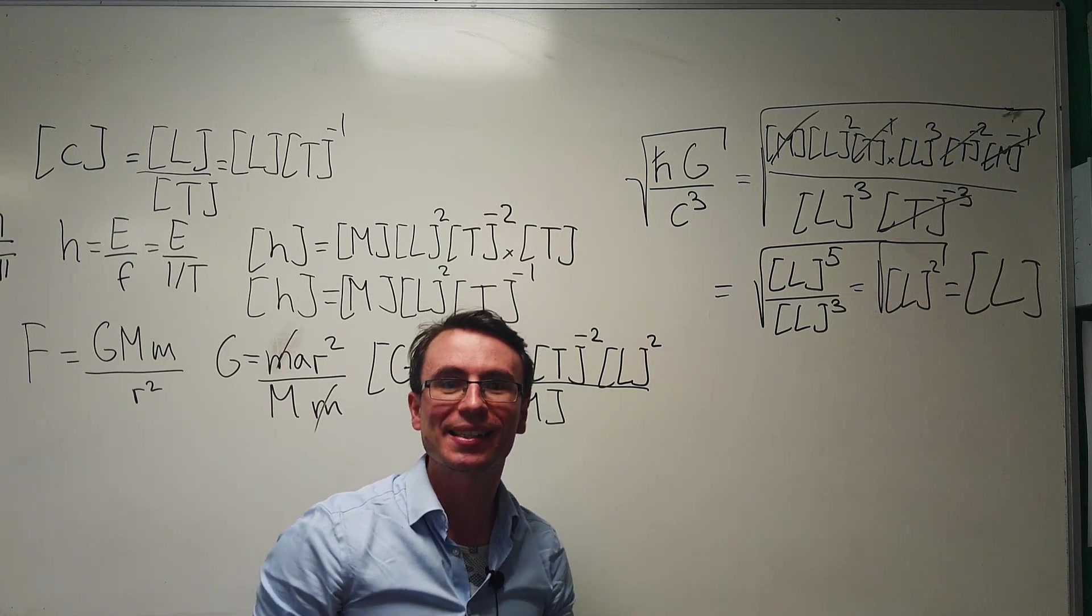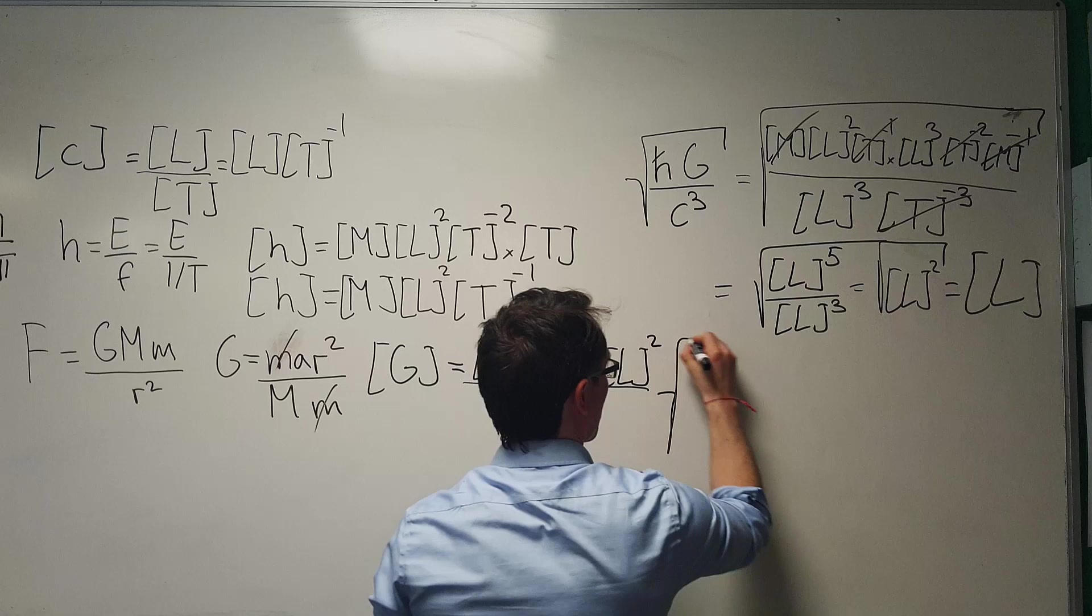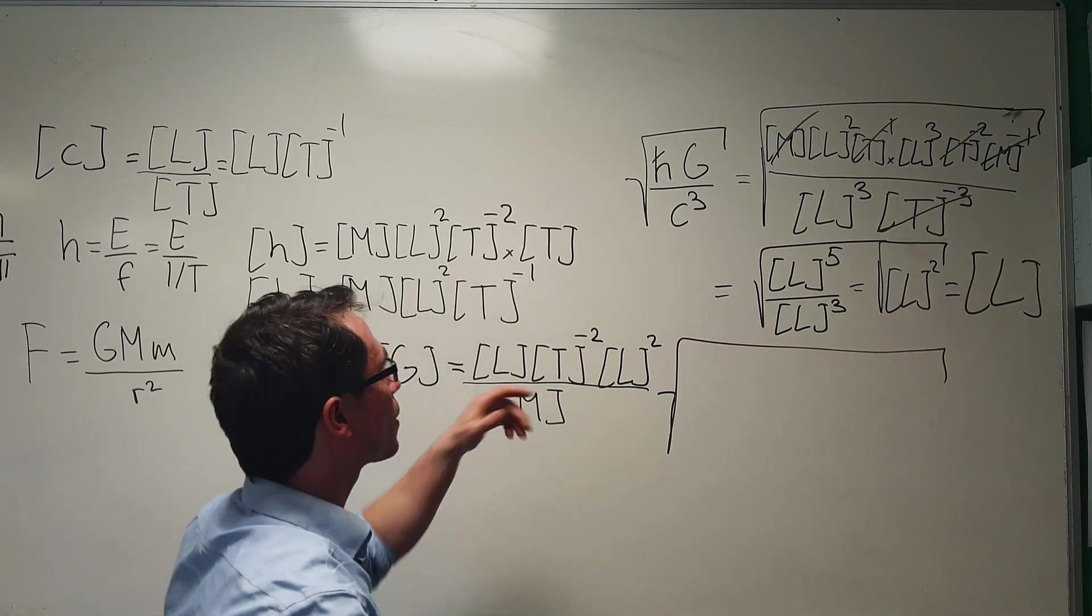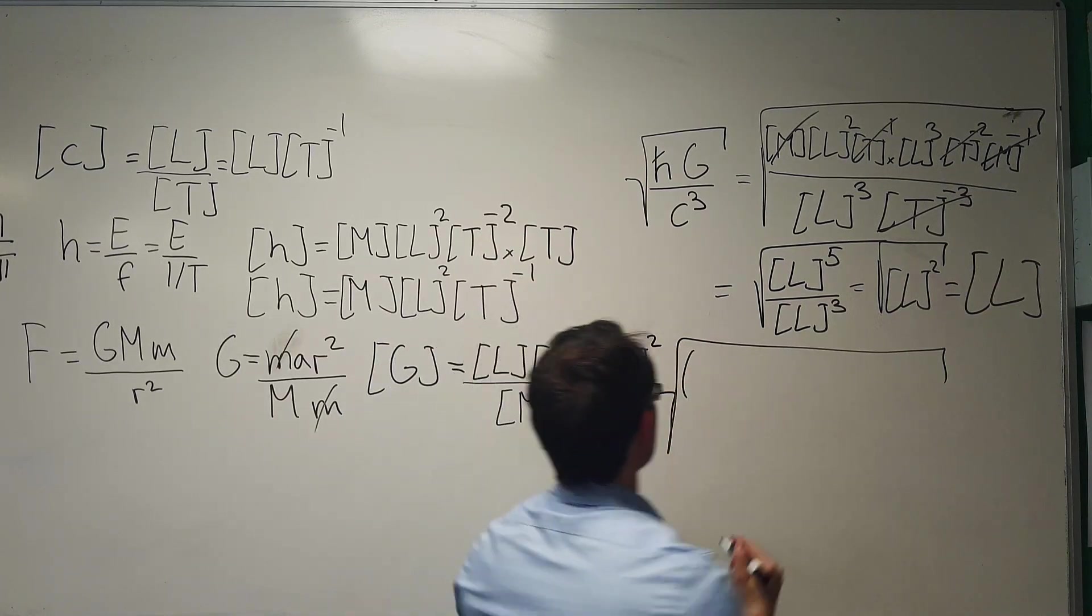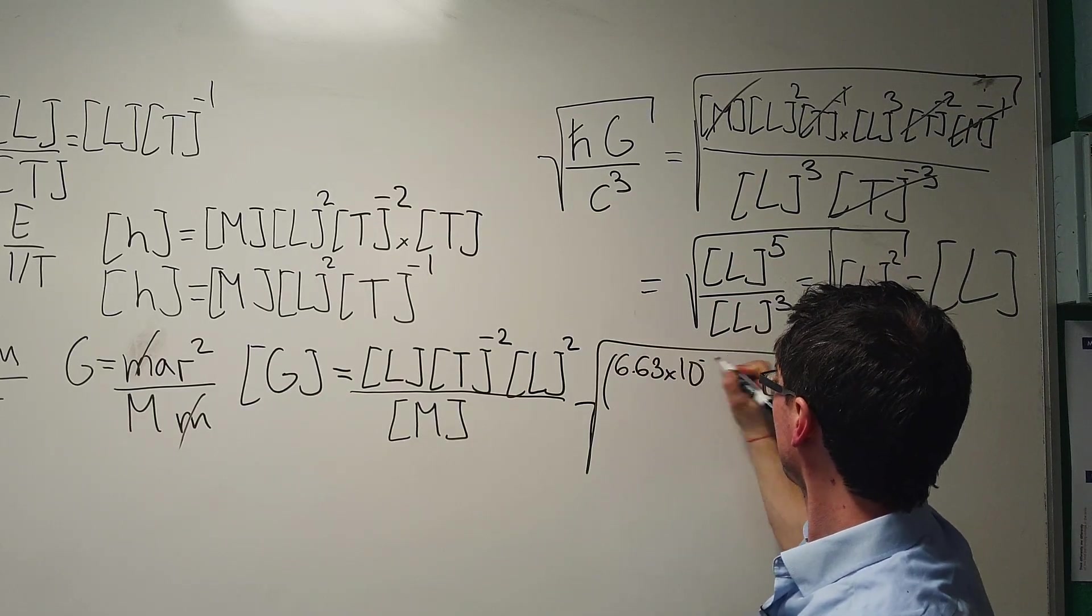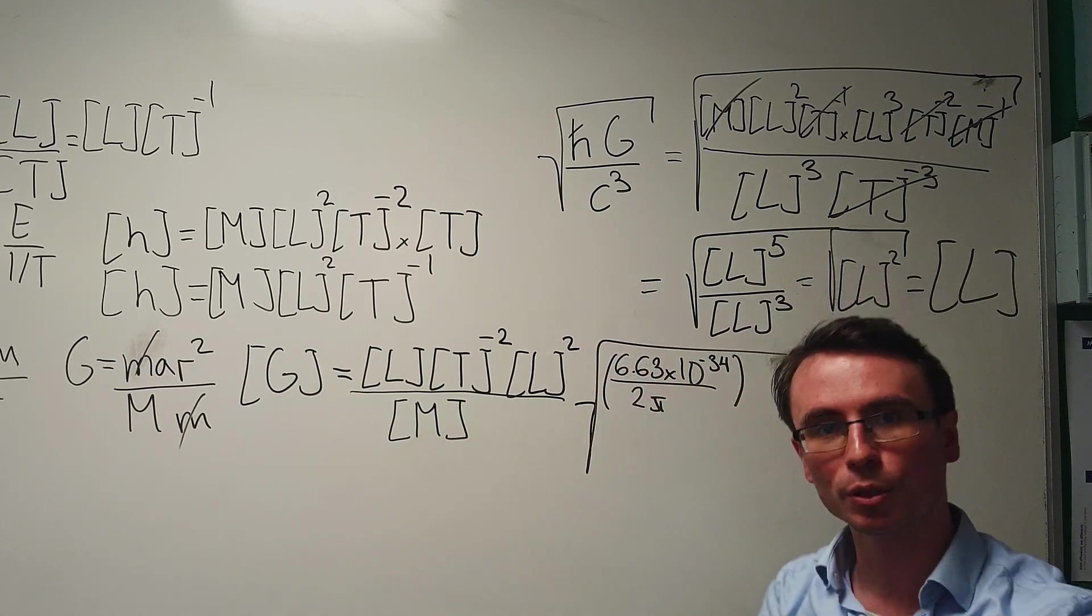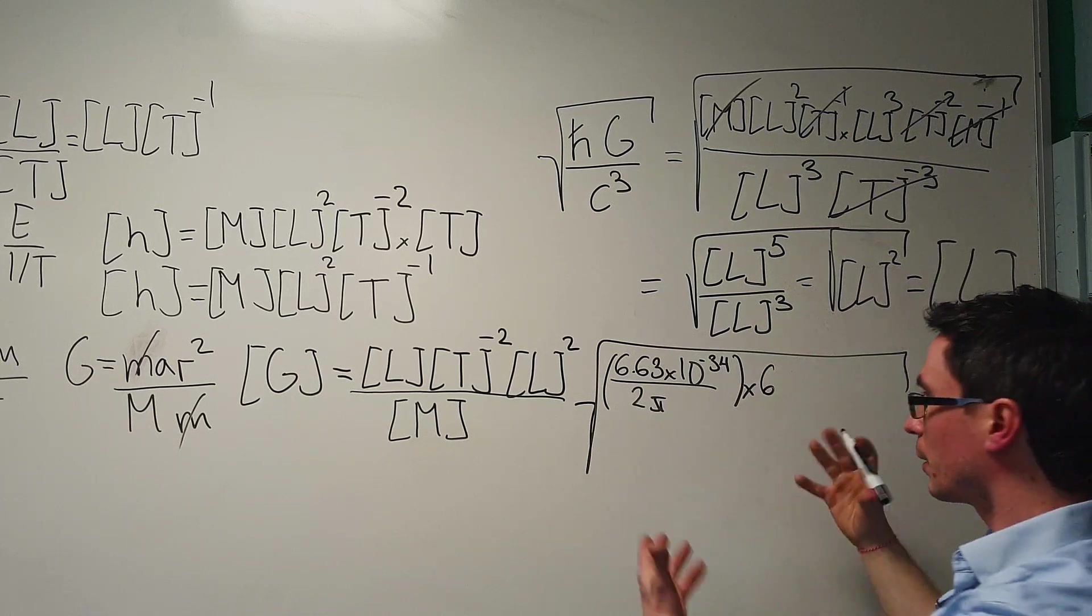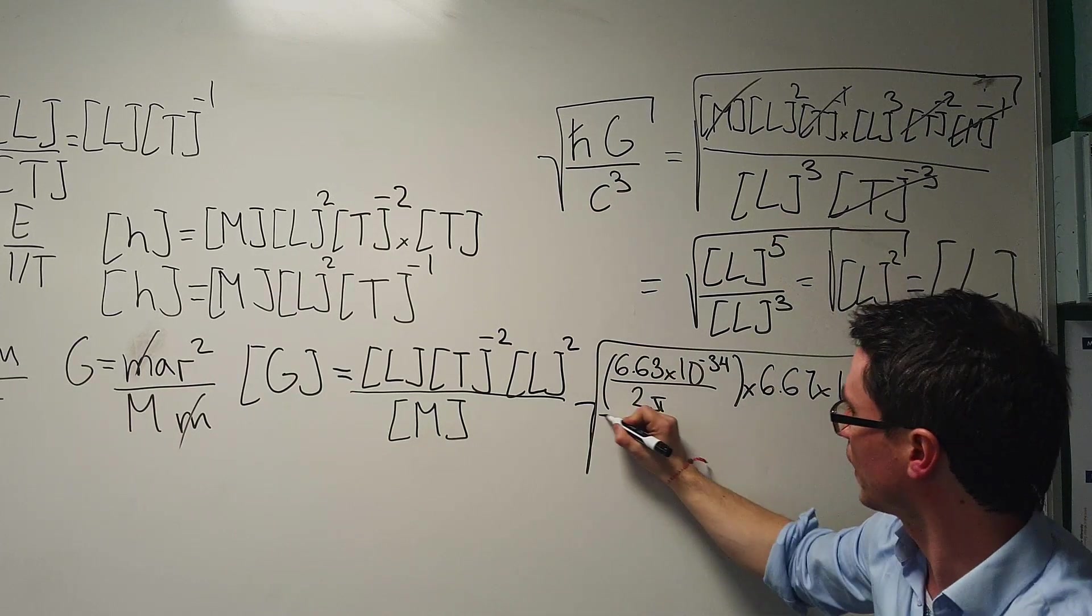Let's calculate this in meters. All we need to do is use some values for those constants. I'm going to be using approximate values. So H bar is just H over 2π. So this will just be equal to 6.63 times 10 to the power of minus 34 over 2π. Let's multiply that by G, which is, these are all in SI units, multiply by 6.67 times 10 to the power of minus 11.